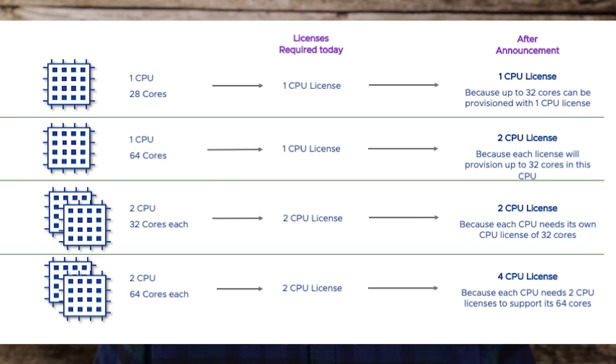In today's model, one is paying per-socket — whether you have four cores or 64 cores in that socket, you're paying a per-socket licensing cost. With the new model, you still look at the per-socket side, but you're also looking at how many cores are in that socket. So if you have one to 32 cores, that's still one socket license. But if you start moving up the stack and have a 64-core AMD EPYC 7742 processor, you're going to need two 32-core per-socket licenses.